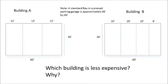Suppose you have two buildings with a double T floor sitting side by side, and one bay is pulled out of each. In the building on the left, three double Ts 12 feet wide are used. In the building on the right, three double Ts 10 feet wide and one double T 6 feet wide are used. Take a moment and think about which building you think is going to be less expensive and why.